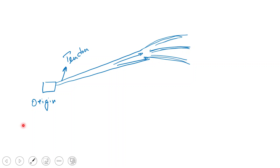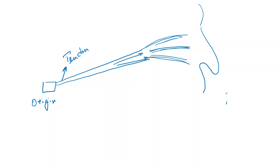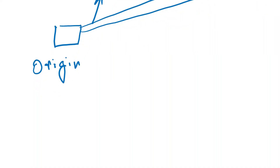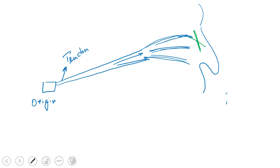What is the fate of insertion of these lamellae? The superior lamella crosses the orbital septum — the septum present along the upper eyelid. The superior lamella crosses the orbital septum and gets inserted onto the skin of the upper eyelid.